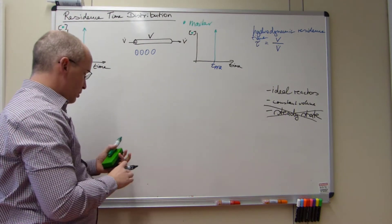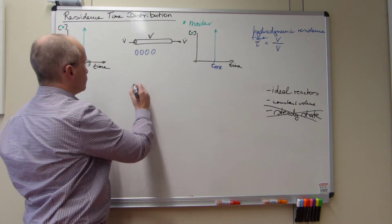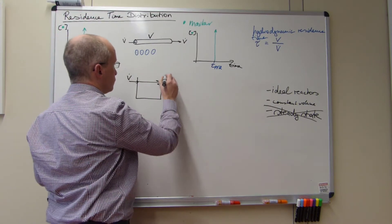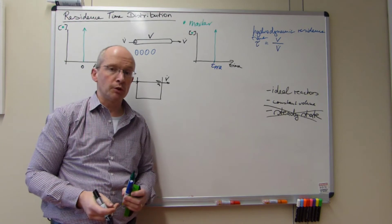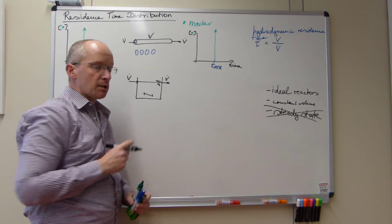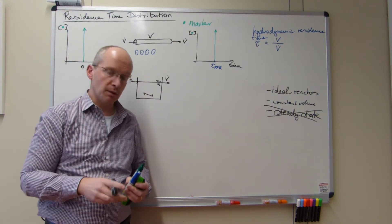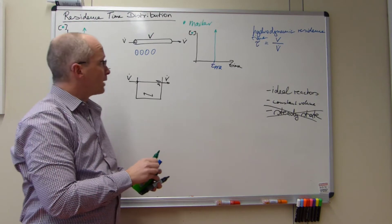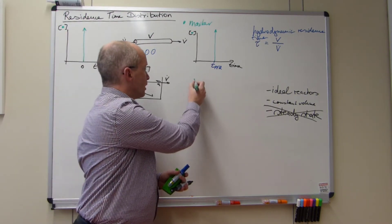What happens in a continuous stirred tank reactor? Again, we will introduce everything at the same time. Stir it ideally, so that we have an instant mixing of these green markers in the reactor. And what we will get as a result...